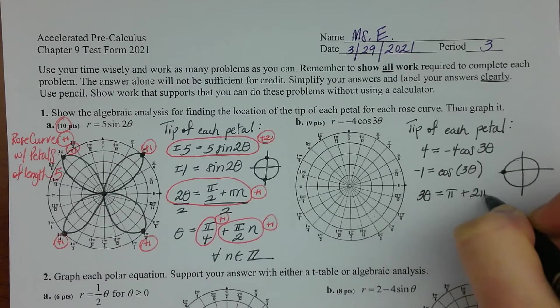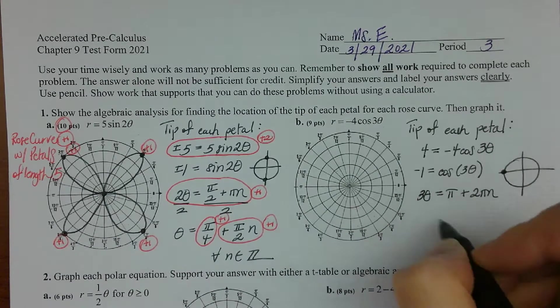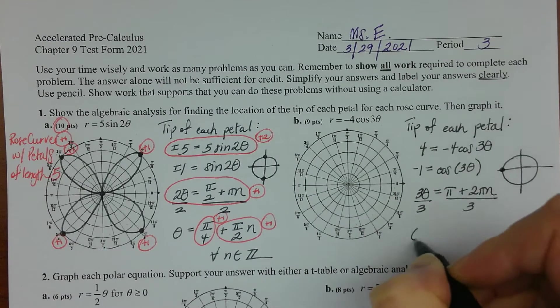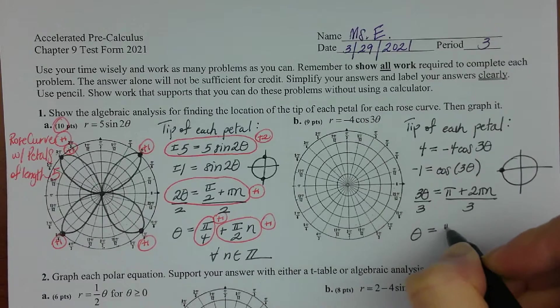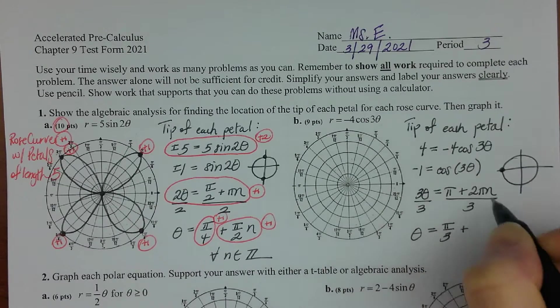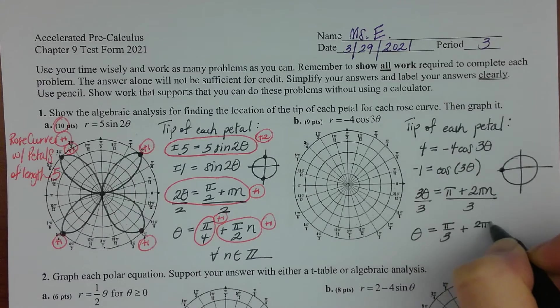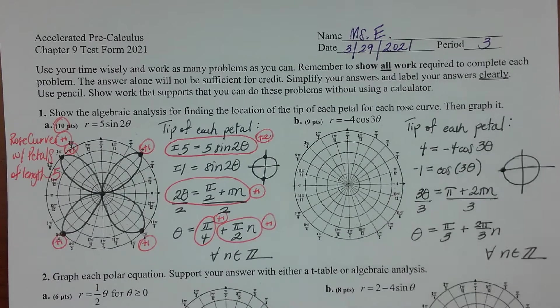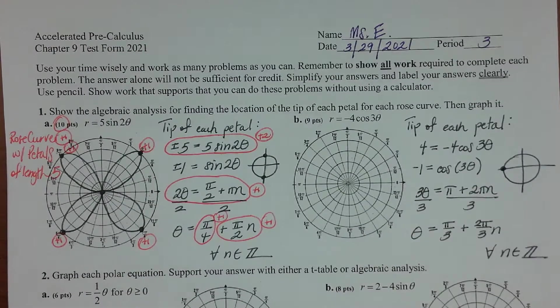And then divide both sides by three, and you get theta would equal pi over three plus two pi over three n for all n from the set of the integers. There we go.